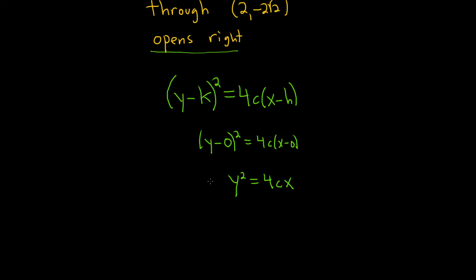Now we're told it passes through this point (2, -2√2). That means when x = 2, y = -2√2. We can take these numbers and plug them into this equation to solve for c.